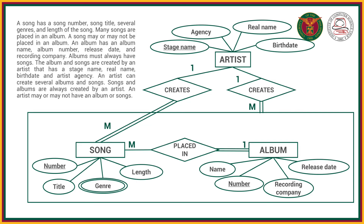A song has a song number, song title, several genres, and length of the song. Many songs are placed in an album. A song may or may not be placed in an album. An album has an album name, album number, release date, and recording company. Albums must always have songs. The album and songs are created by an artist that has a stage name, real name, birthdate, and artist agency. An artist can create several albums and songs. Songs and albums are always created by an artist. An artist may or may not have an album or songs.